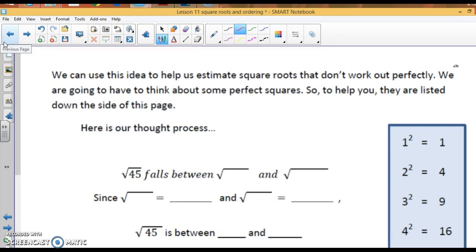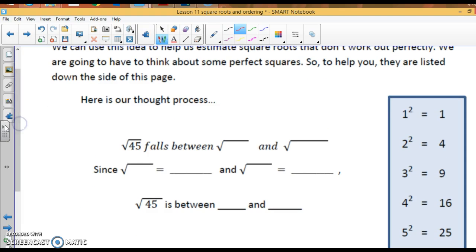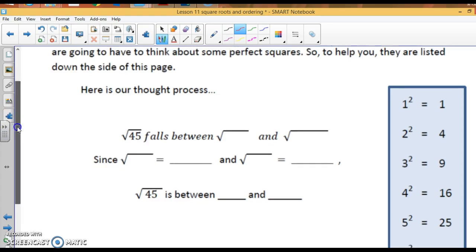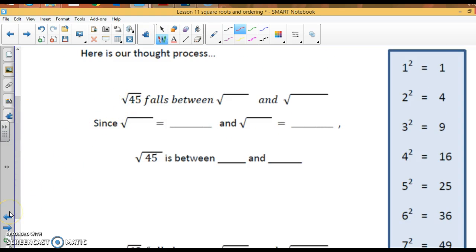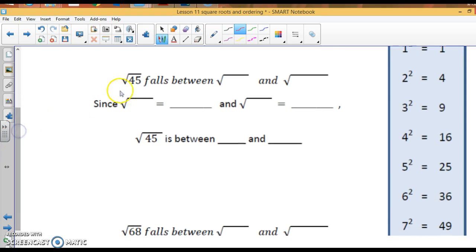Now, we're going to use this concept to help us estimate square roots of non-perfect squares. So, this is the square root of 45. That is not a perfect square. But, 45 falls between 36 and 49. Then, the square root of 36 is 6, and the square root of 49 is 7. We know that the square root of 45 has to be between 6 and 7.